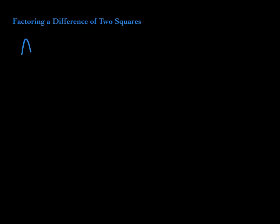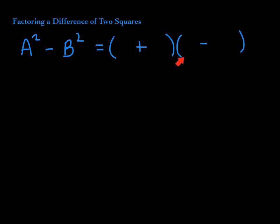If I give you a squared minus b squared — a perfect square minus a perfect square — this is a difference of two squares. It will factor as a product of two binomials. One will be plus, the other one will be minus. What we put first is the term whose square gives you a squared — that will be a. Second, I put the term whose square gives me b squared — that will be b. This is the pattern to follow whenever you want to factor a difference of two squares.